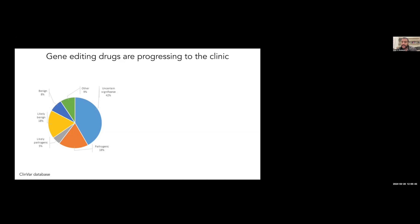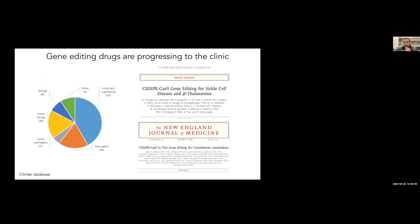Gene editing is obviously reaching a really great level of maturity as we're starting to see drugs progress to the clinic. There's the CRISPR Therapeutics, Vertex, and Veritas drug for blood disorders like sickle cell disease, as well as Intellia's in vivo drug. But despite this progress, we have two human cures, yet there's still millions of actual pathogenic variants in ClinVar.